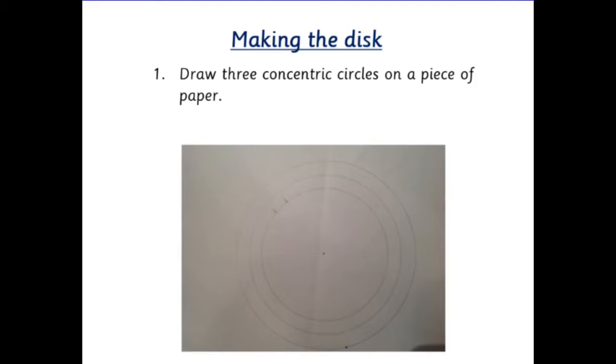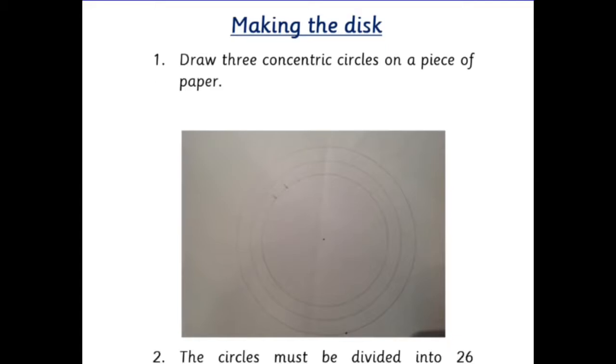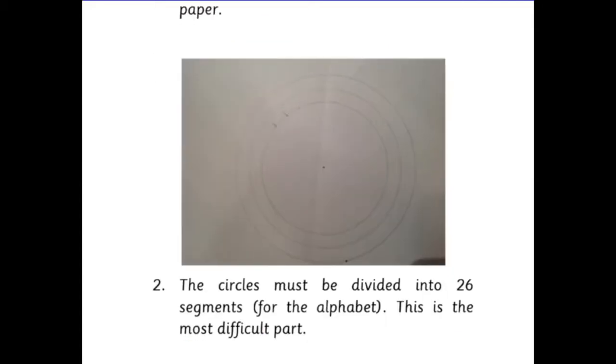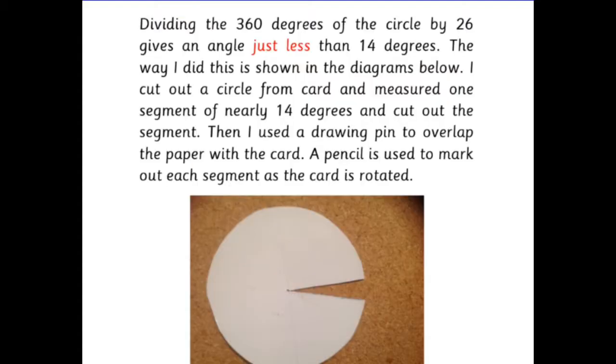Start off by drawing three concentric circles on a piece of paper. The circles must be divided into 26 segments for the alphabet. This is the most difficult part. Dividing the 360 degrees of the circle by 26 gives an angle of just less than 14 degrees.